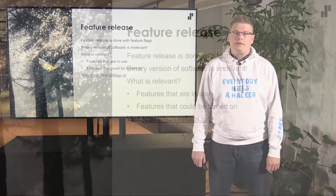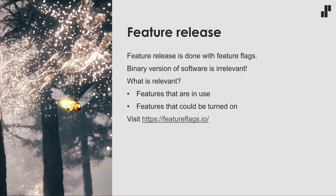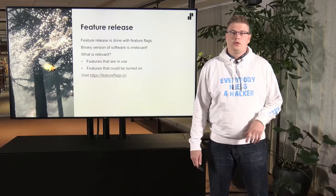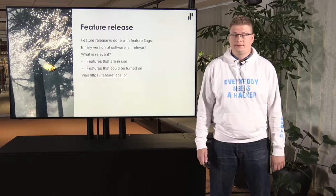So how are features then released? Features are released with feature flags. The main idea for me is that the binary version of my software doesn't really matter. What matters is what features my end users are using and what features there are that could be used. When I develop a new feature I flag it as new, and the feature can go to production already but it is enabled afterwards — like with a soft launch — when my customers decide the feature is ready for end users, then we release it after it is already in production. If you want to learn more you could visit featureflux.io to get more hints about how to do that.